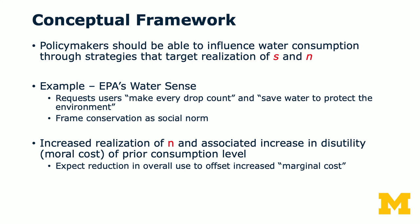What the policymaker could do is influence water consumption through strategies that target the realization of S and N. For example, EPA's WaterSense campaign requests users to 'make every drop count' and 'save water to protect the environment,' framing conservation as a social norm. If you increase the realization of N, the associated increase in disutility from deviation from that social norm would pump up the M term — in other words, it will give you an increase in marginal cost from deviating from the social norm.